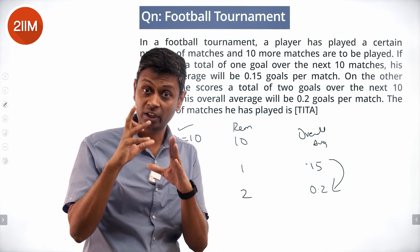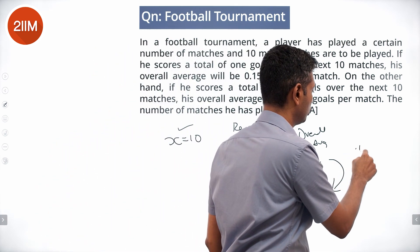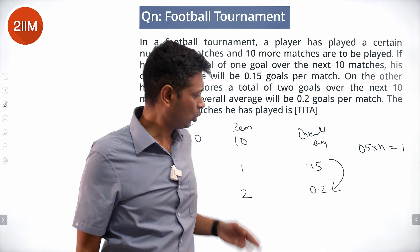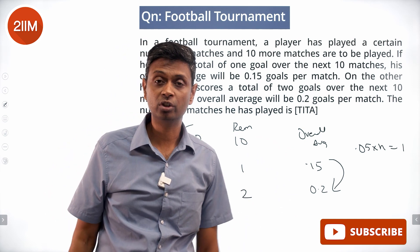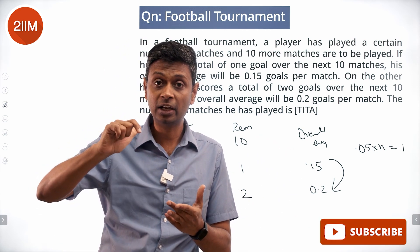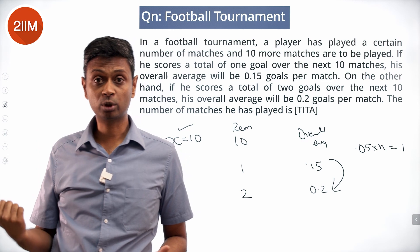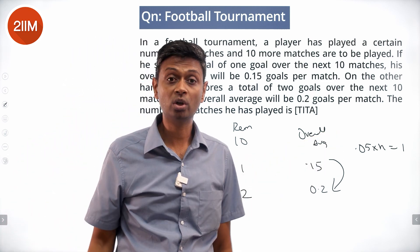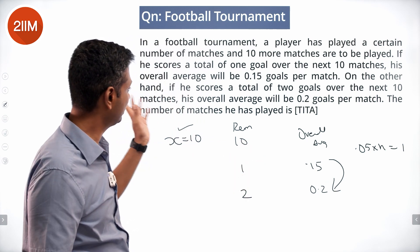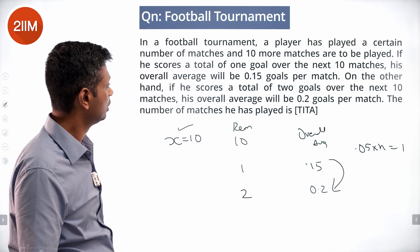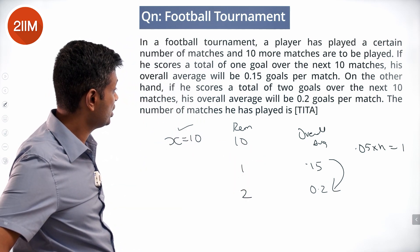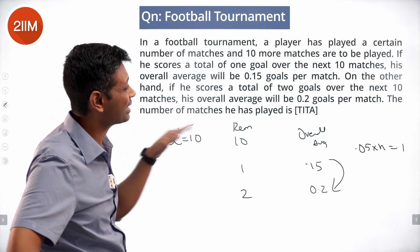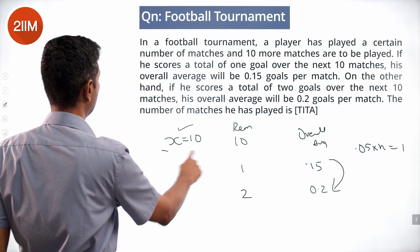The average goes up by 0.05, so 0.05 into n equals 1. The total goes up by 1 and the average goes up by 0.05. The amount the average goes up by, multiplied by the total number of matches, equals the amount the total goes up by. So total matches is 20: 10 remaining plus 10 he has already played. He has played 10 and 10 more matches are yet to be played.